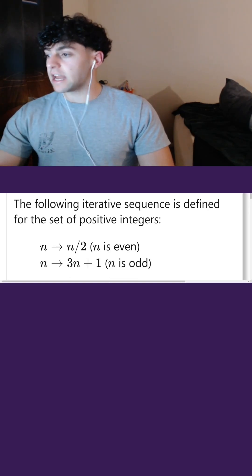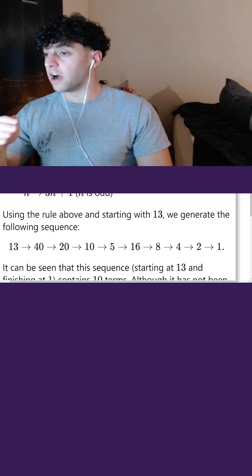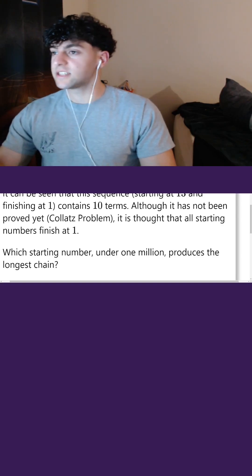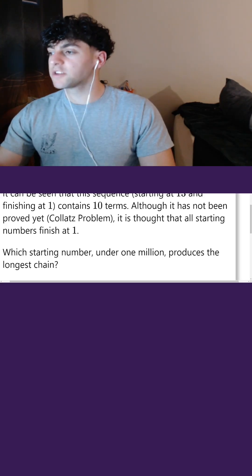If n is even, then we'll divide n by 2, and if n is odd, we'll multiply n by 3 and add 1. Using the rule above and starting with 13, we generate the following sequence. So it can be seen that this sequence starting at 13 and finishing at 1 contains 10 terms. And this problem, the Collatz problem, it is thought that all starting numbers finish at 1.